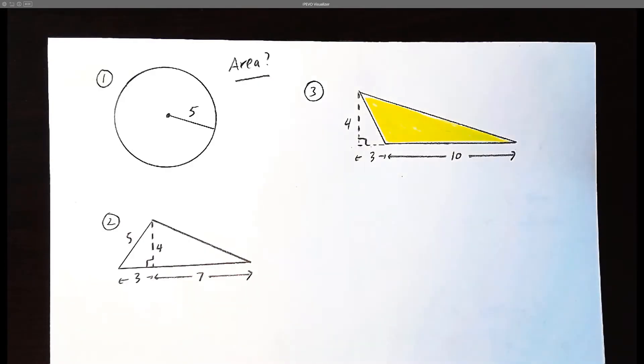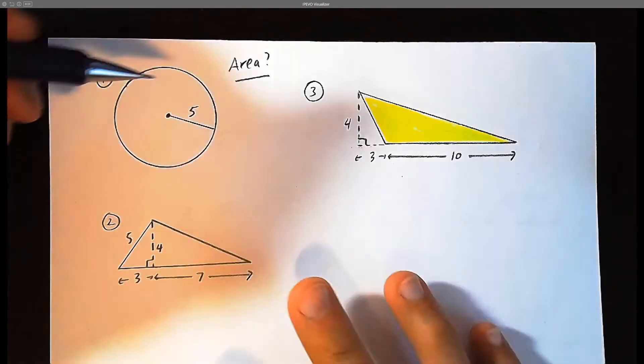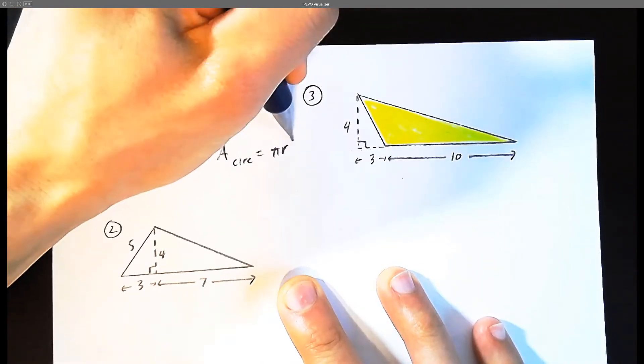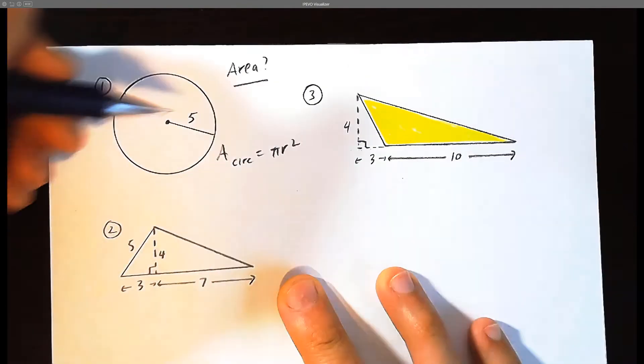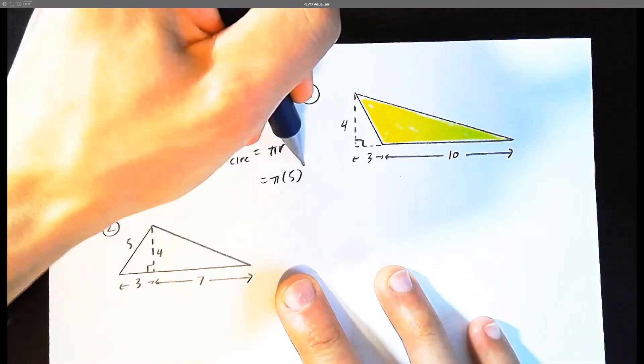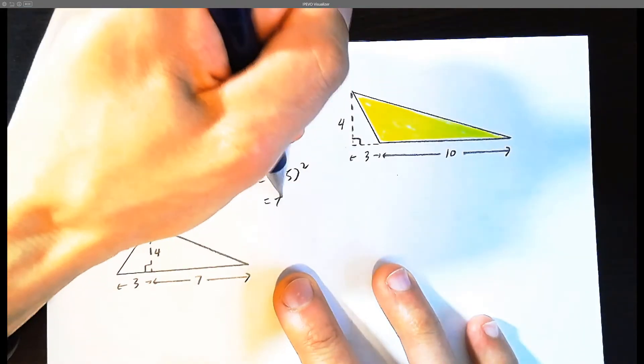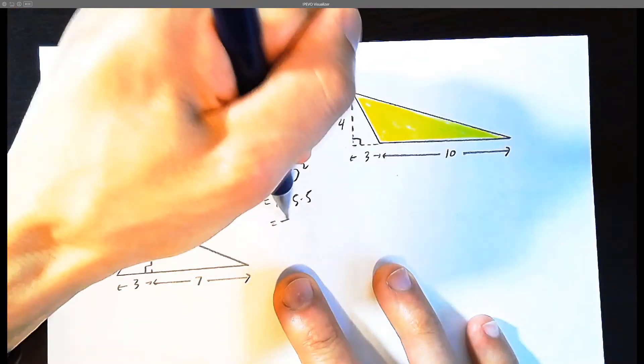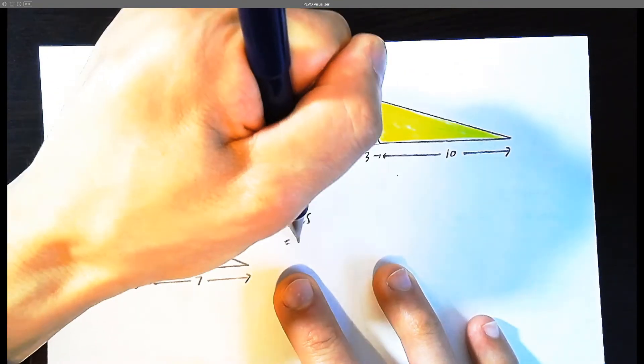Let's find the area. The area of the circle is equal to pi r squared. The radius here is given as 5. Pi times 5 times 5, which is 5 squared, is pi 25, or better to say 25 pi.